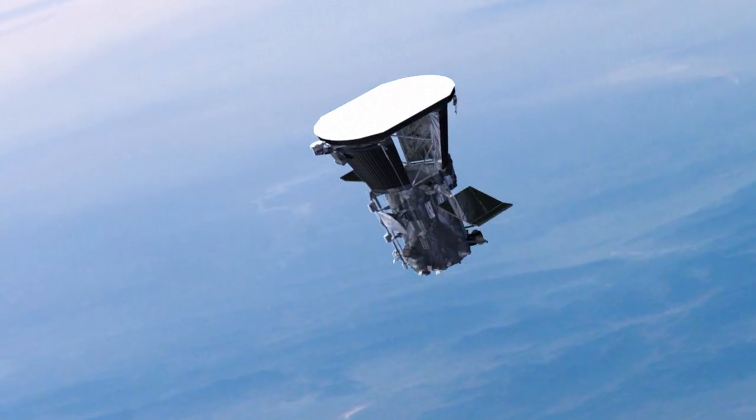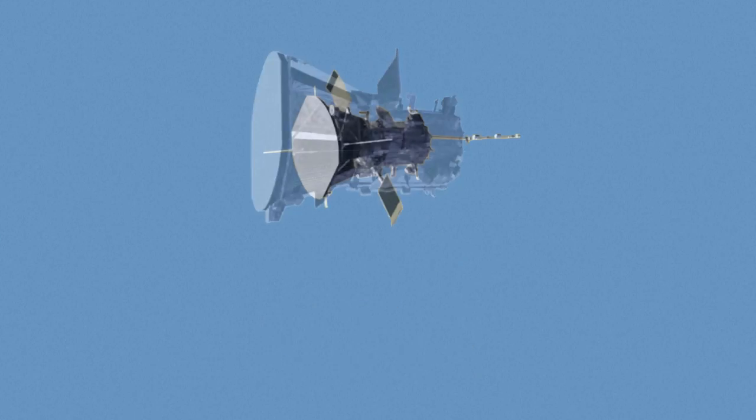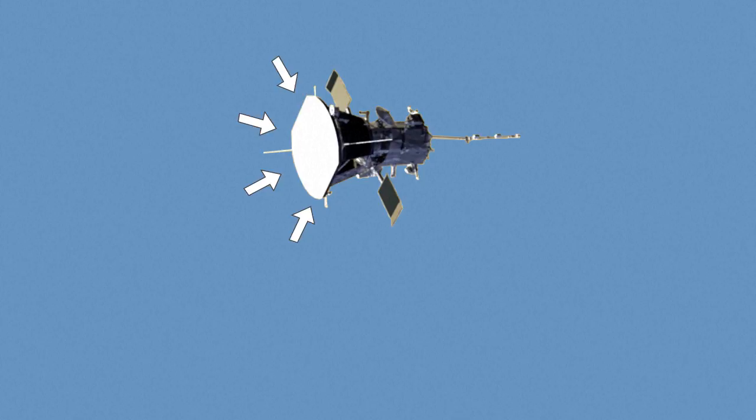The size of a small car, the probe is equipped with a carbon-composite heat shield to keep its instruments cool enough to operate. It's fitted with solar arrays and electric antennas.